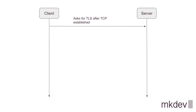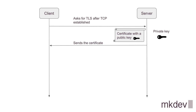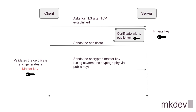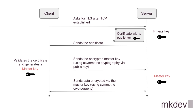A client establishes a TCP connection with a server and asks the server for a new TLS connection. The server sends a certificate with some extra details, like supported cipher versions. The client validates the certificate, generates a master key, and sends it to the server in encrypted form via the public key from the certificate with the chosen cipher version. The server decrypts the master key via the private key. Now both parties have exchanged the same master key that will be used for symmetric encryption of all the data sent later.